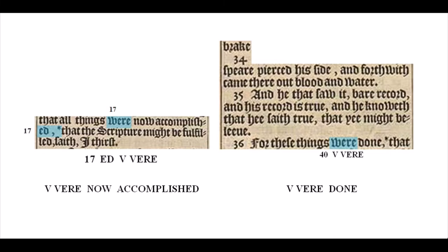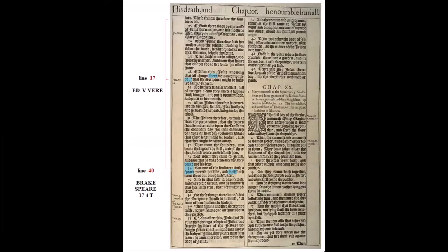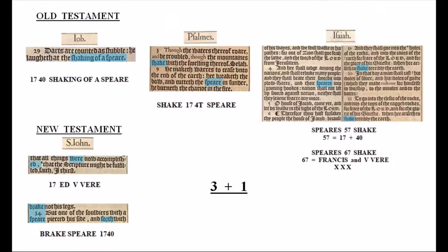It could be a coincidence, or it may reflect some of the last words spoken by Jesus: 'It is accomplished' or 'It is finished.' So beginning on line 17 and counting right to left 17 letters we get the name ed-V-Vere, and on the fortieth line the verse number 34 with 'break' and 'spear' printed above and below it. After 'spear' there are 17 letters followed by 'forth' or 'four-T.' Shake and spear appear in three books of the Old Testament and once as 'break spear' in the New — coinciding with three and one, the hermetic idea of the Godhead as a trinity containing God's creation.